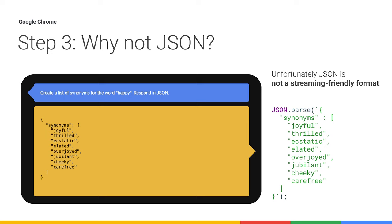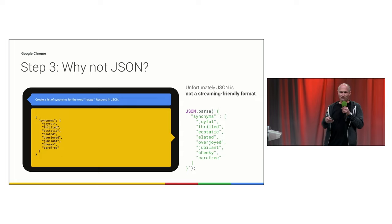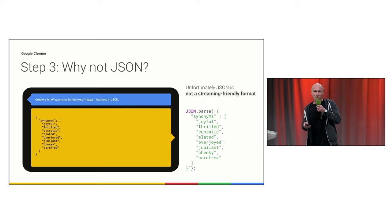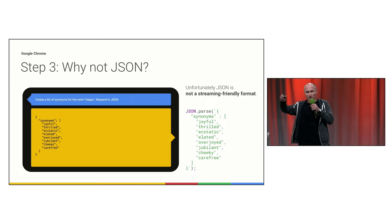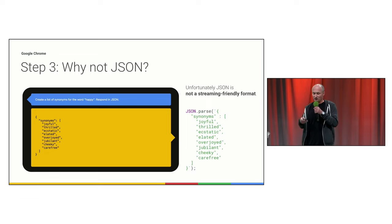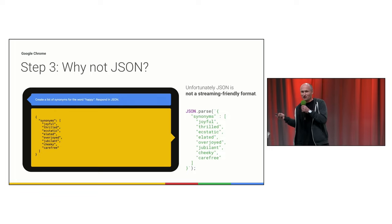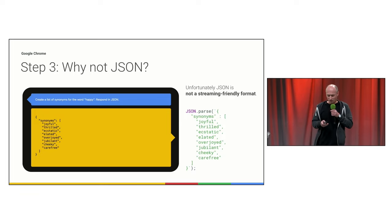As an aside — why not JSON? If I want structured data, why not request JSON from the model? Gemini Nano is perfectly capable of giving JSON, but JSON is not a streaming-friendly format. I can only parse it once I have the entire message, meaning I'd have to wait for the full response before making sense of it. I want maximum speed and results as soon as possible. That's why I avoid JSON — though it's over-engineered for this toy app, you can see why it matters in real applications.